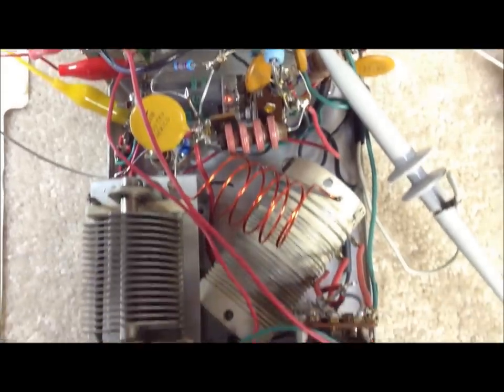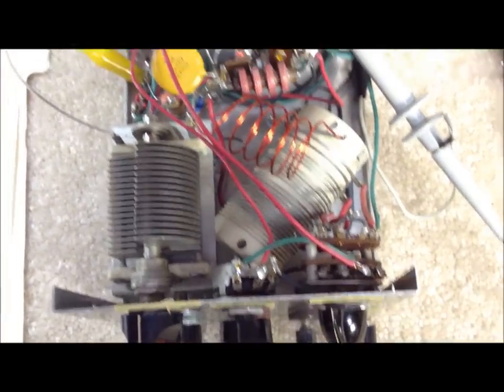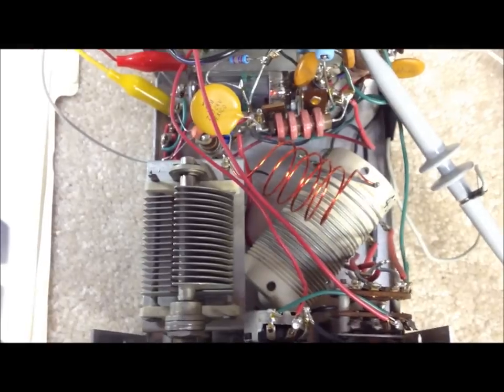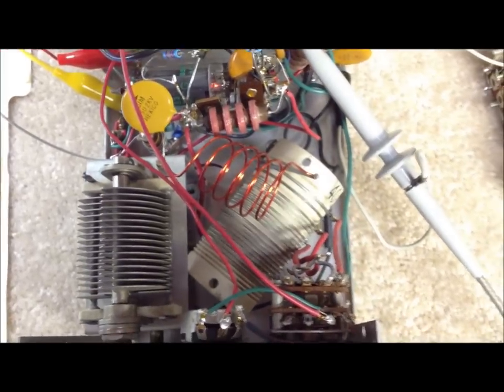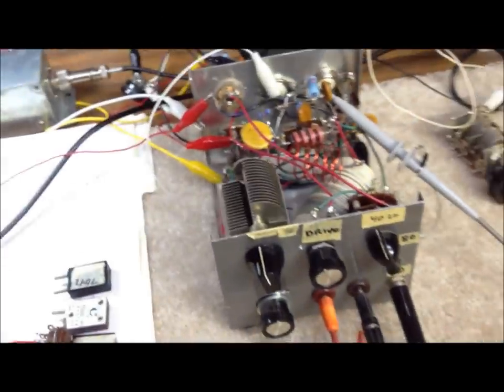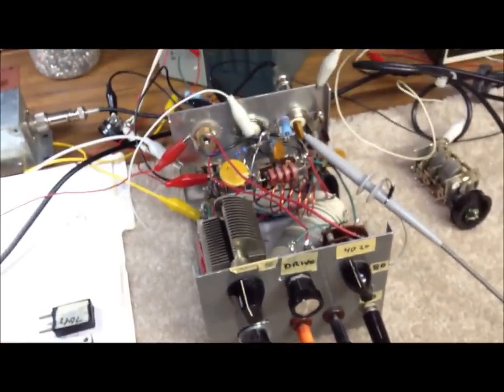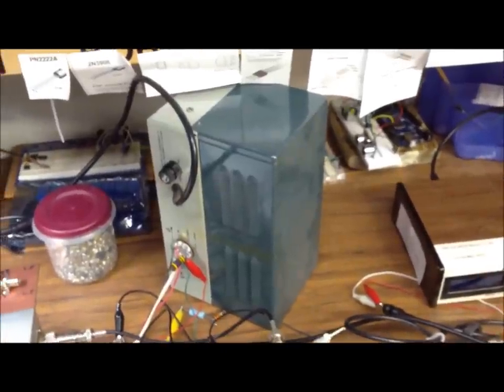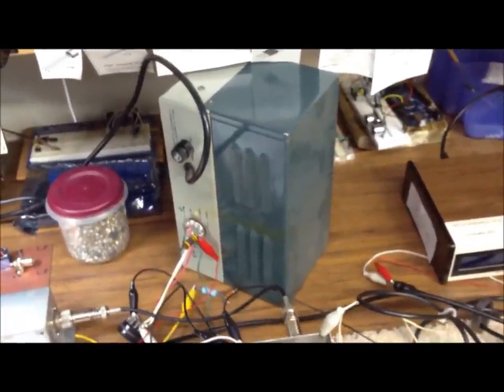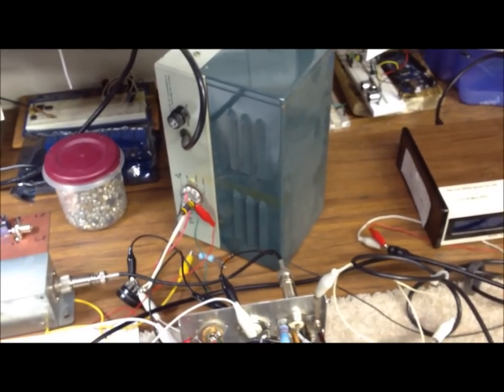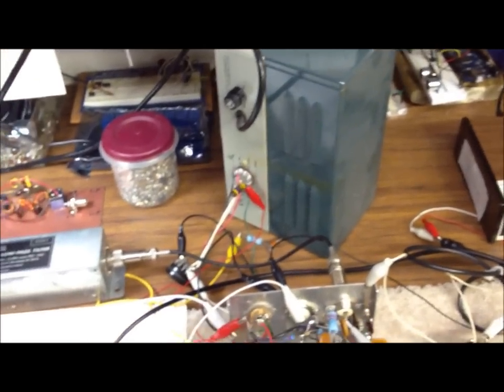It's really ugly construction. We got some parts out of an old HW101, some tuning capacitors and the coil and a lot of other junk box parts. It's a little oscillator that puts out about 4 or 5 watts on a good day. We've got an old HP20 power supply providing 300 volts to the plate and a 6 volt filament supply.